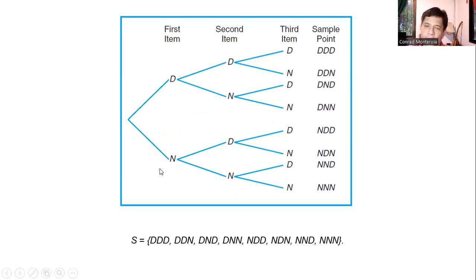Another example of writing the sample space. This is related to manufacturing. So, for example, you are testing a product whether it is defective or not defective. So you're going to have three samples or three items. So for the first item, it's either defective, letter D, or non-defective, letter N. So for the second item, it's either defective or non-defective, so on. So for the third item, as you can see, it's either defective or not defective.